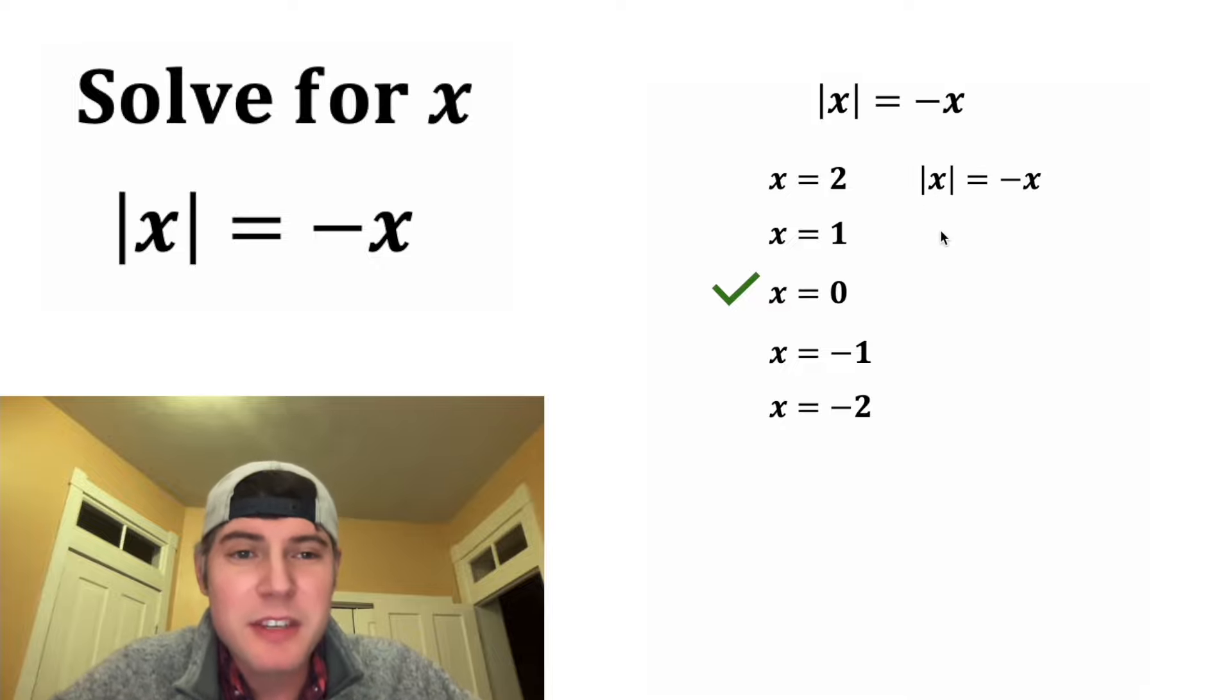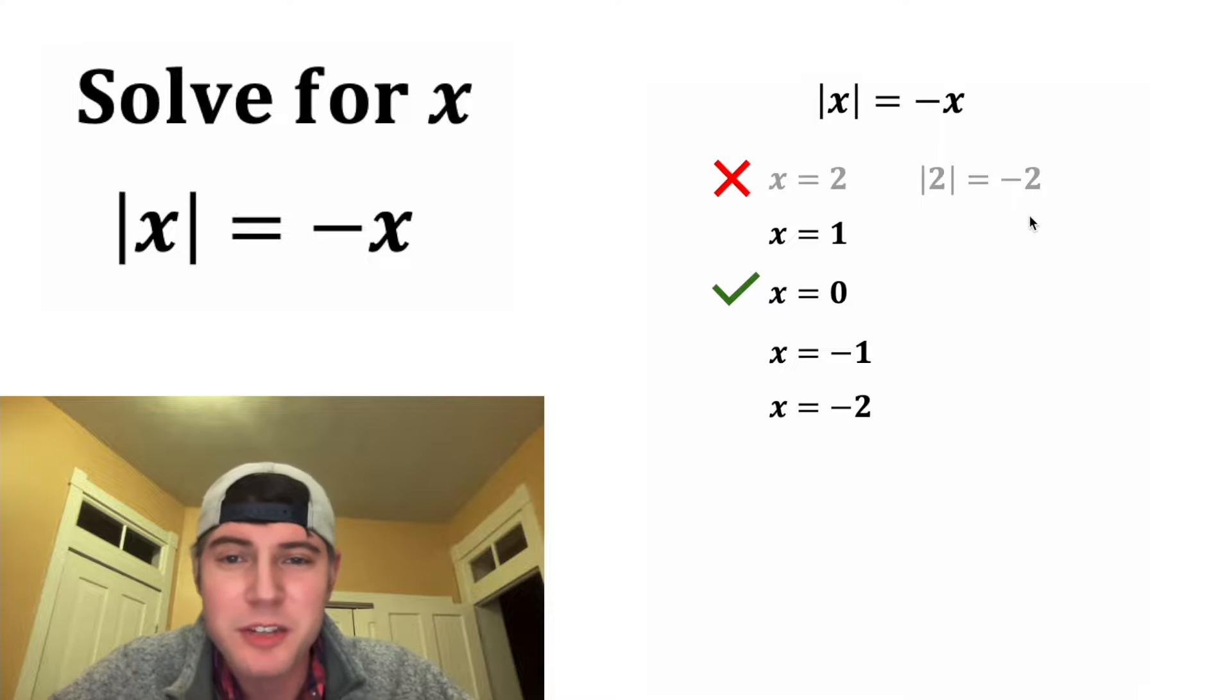Let's try a couple other values. So let's copy this down and plug in two for the x's. Well, absolute value two does not equal negative two, so this one doesn't work. And let's do the same thing for x equals one. Let's plug in one for both the x's, and this is also not true.